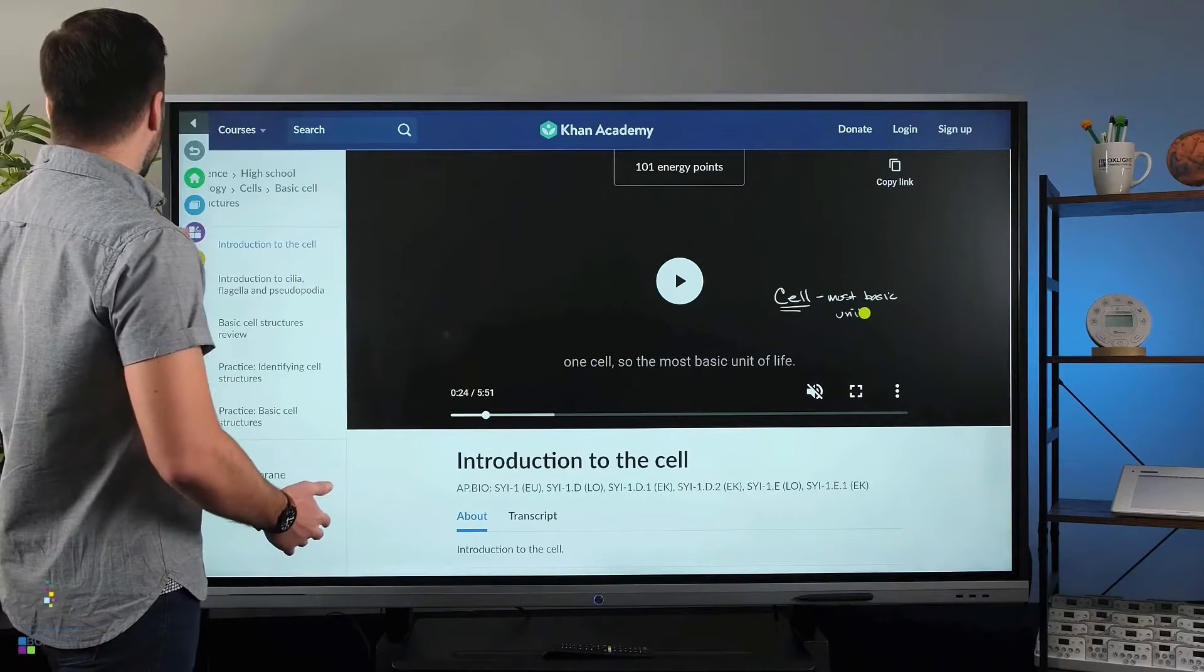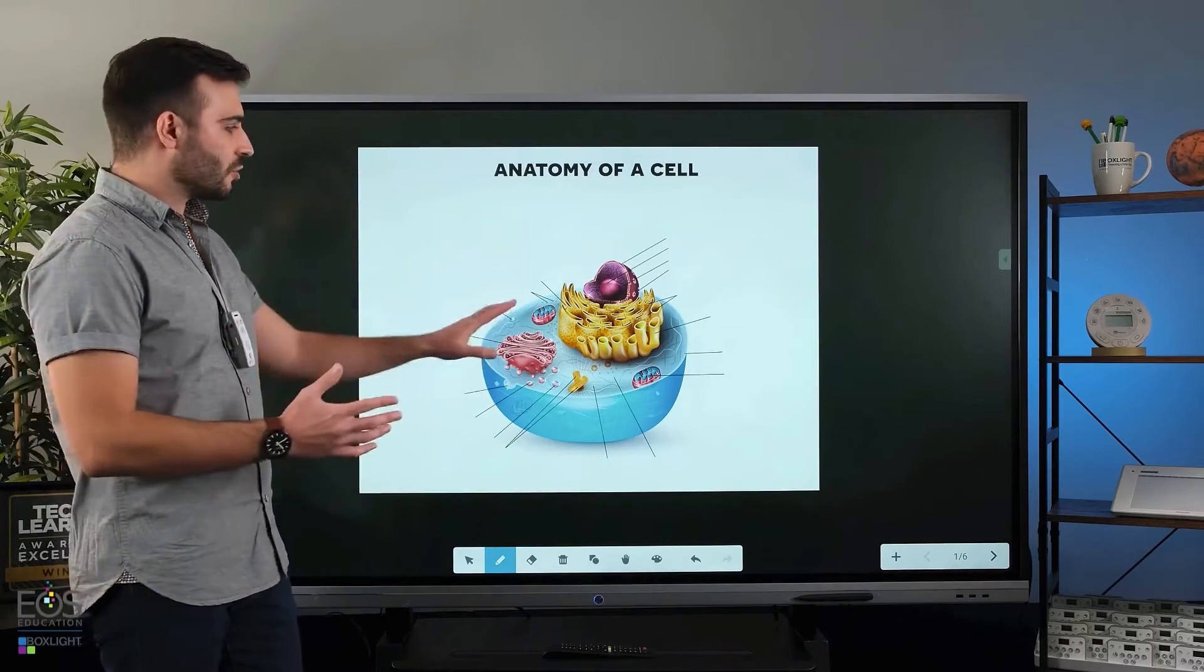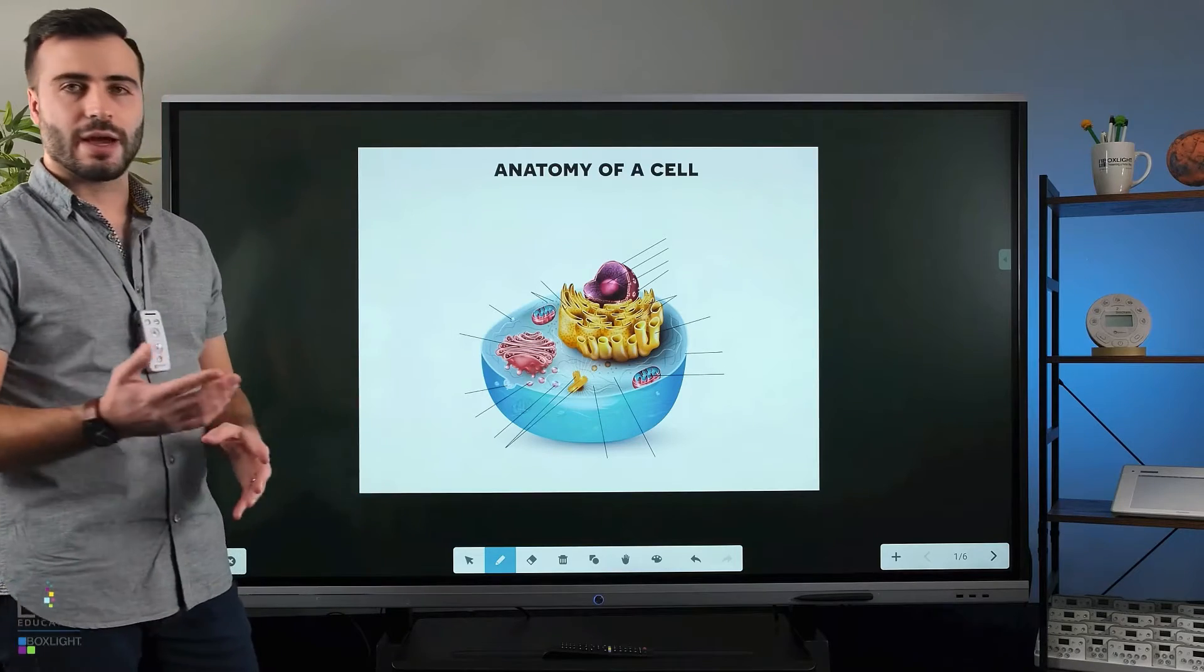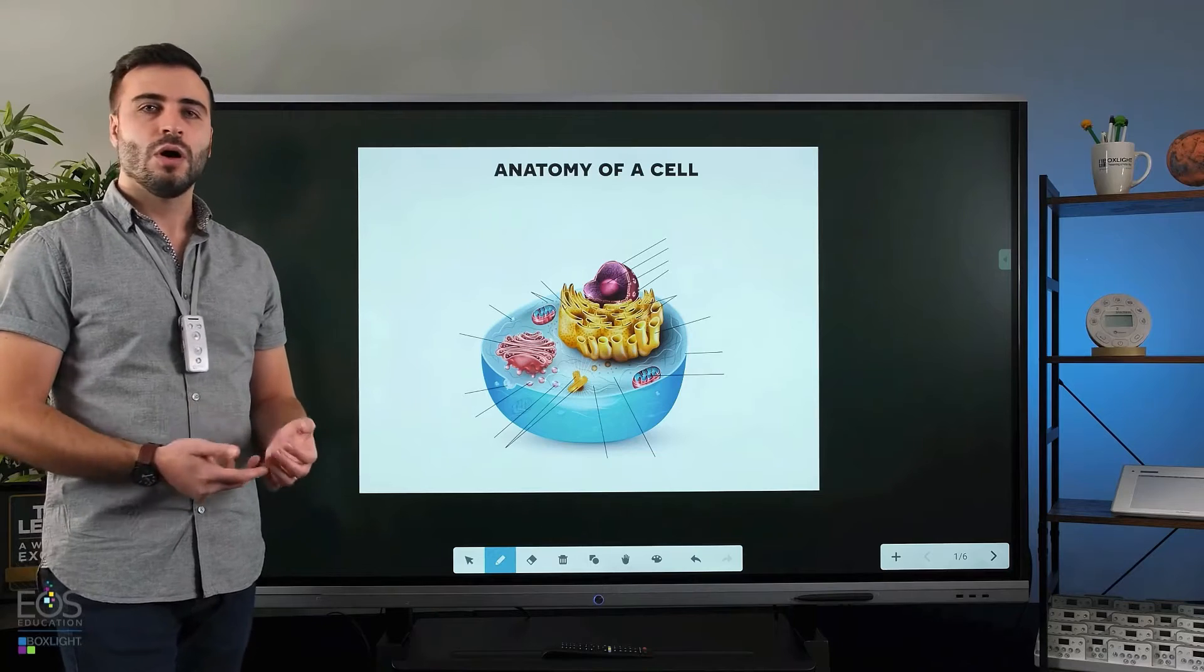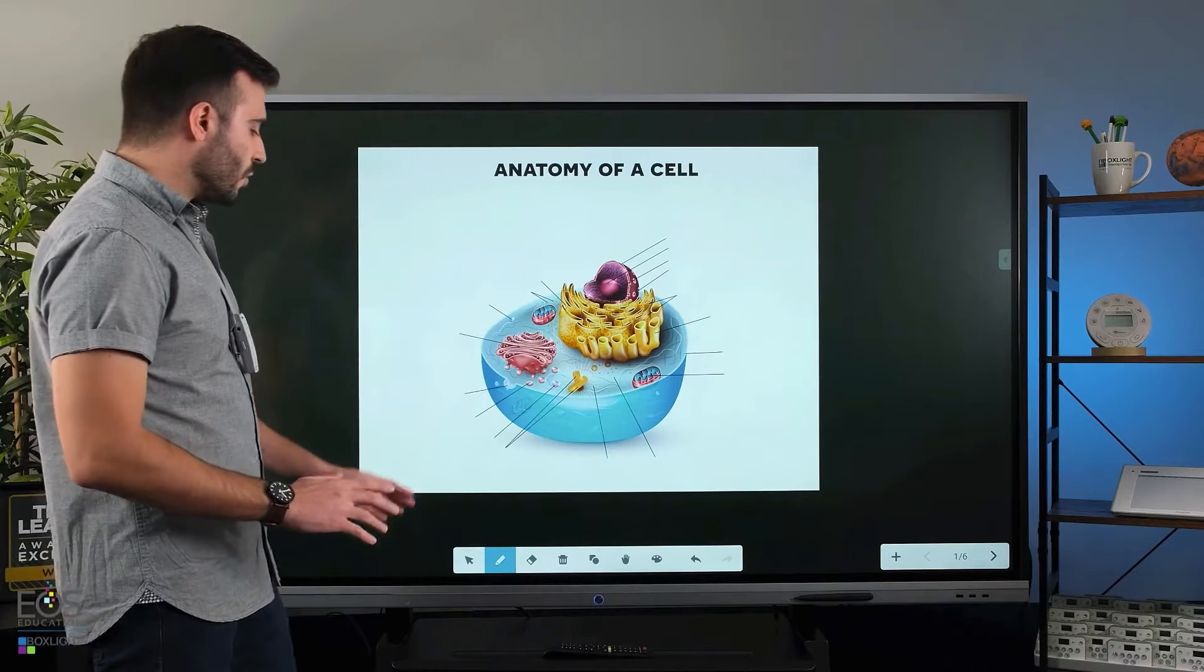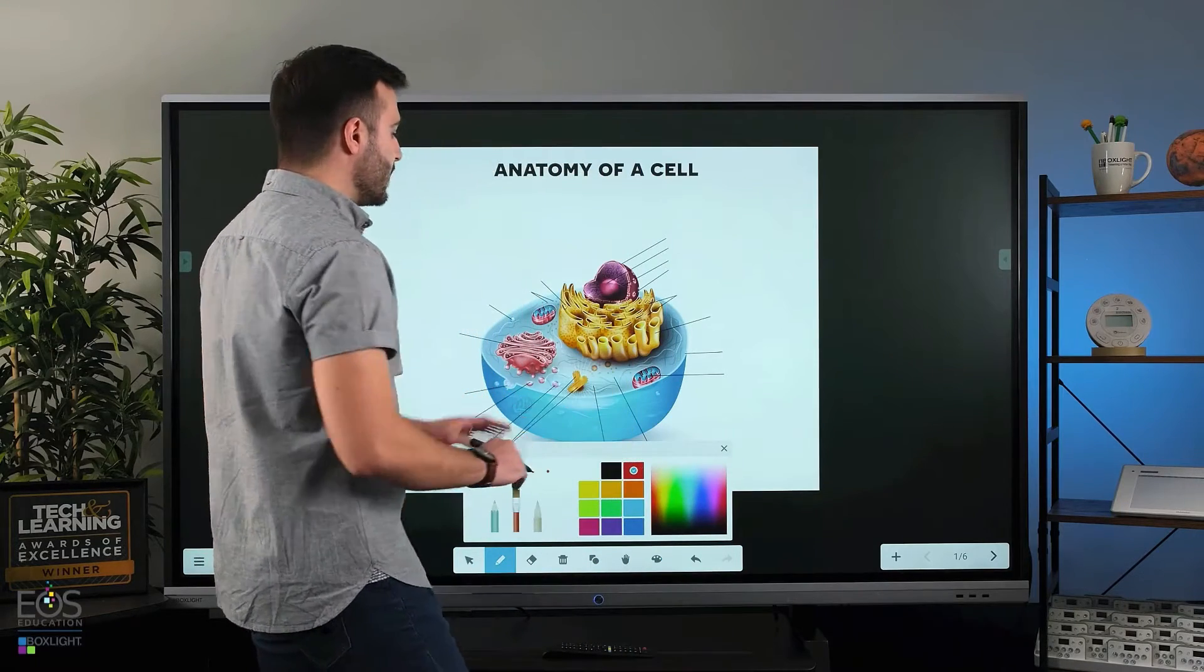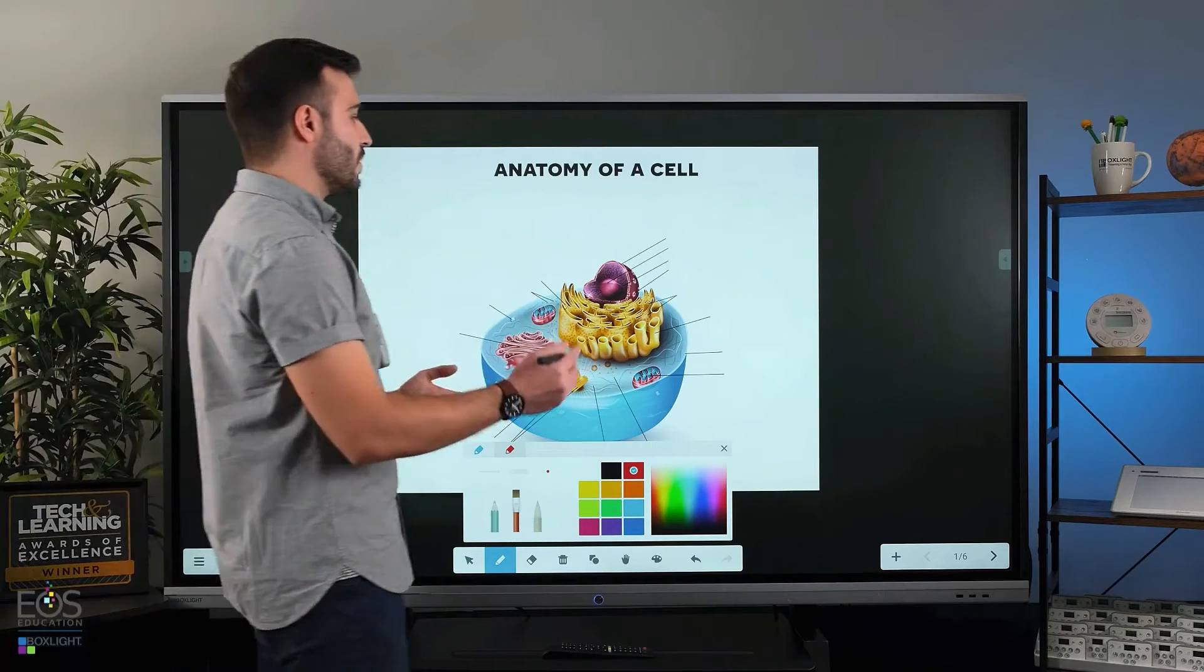Then you can delve into some of the more specific structures and functions that you want to talk about. So you can use an overview image like this. I really like how the note app allows you to import images that you can find either from your curriculum or on the internet. You can just download them directly to the panel and of course use the different annotation tools here to start marking up these diagrams. It's a really good way to get these high resolution images that otherwise you might have to draw by hand if you weren't using something like this.